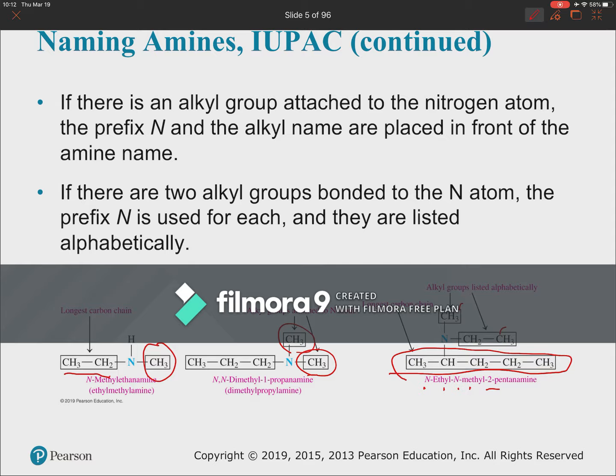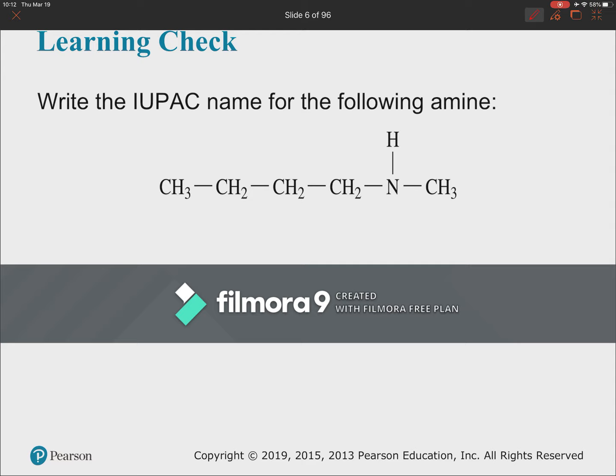Let's name a practice example. It has a 1-2-3-4 carbon chain, so it's a butanamine — specifically 1-butanamine — and it has an N-methyl group, making it N-methyl-1-butanamine. You have access to the slides so you can look at this worked-out example on your own.